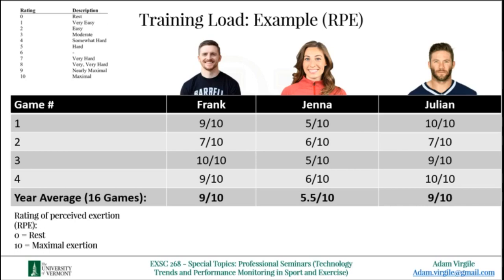I want to point out that objective and subjective measures are not better or worse than one another — they're quite complementary. When you have both, the picture gets a lot clearer. For example, if Julian's RPE was down and his high-speed distance was up, that could indicate an increase in fitness or that he was more ready to perform that day. One of the overarching themes is that context matters — how information is viewed and relayed to others is extremely important for enhancing decision-making and improving performance outcomes for athletes.